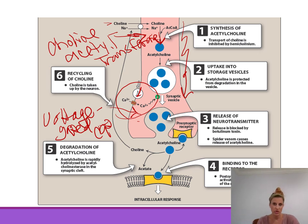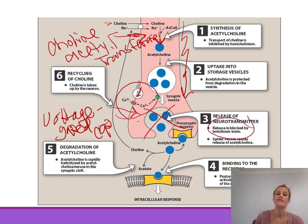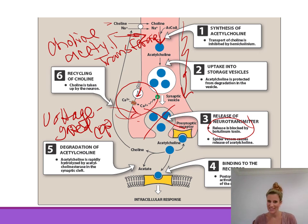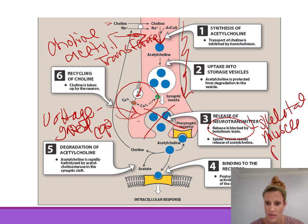Botulinum toxin — used clinically as Botox — inhibits the release of acetylcholine from the synaptic terminal. If you cannot release acetylcholine, you cannot stimulate the postsynaptic cell. Since skeletal muscles are stimulated by acetylcholine, botulinum toxin works at the neuromuscular junction by preventing release of acetylcholine, which creates skeletal muscle paralysis.